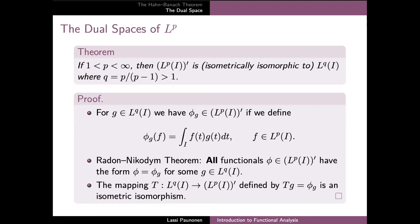The proof for the case where p is greater than one has the following main steps. First, for any function g in L^q we can define a functional φ_g on L^p whose value is given by the integral of the product f·g for any f in L^p. This mapping is clearly linear, and it is well-defined and bounded as a consequence of the Hölder inequality.